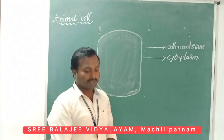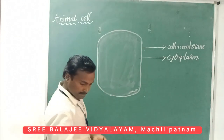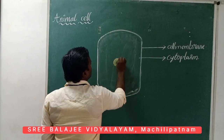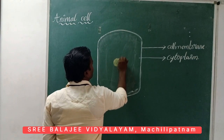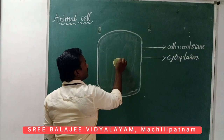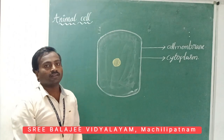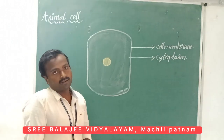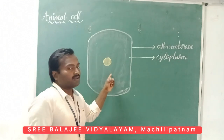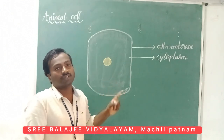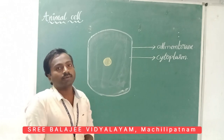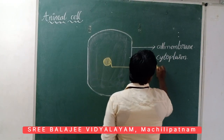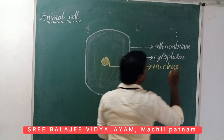Next, I am going to draw the nucleus. In the case of the animal cell, the nucleus is located in the center of the cell. The nucleus is also called the CPU of the cell — the central processing unit. It controls all the activities within the cell, hence it is called the CPU of the cell. This is the main characteristic feature of the animal cell.